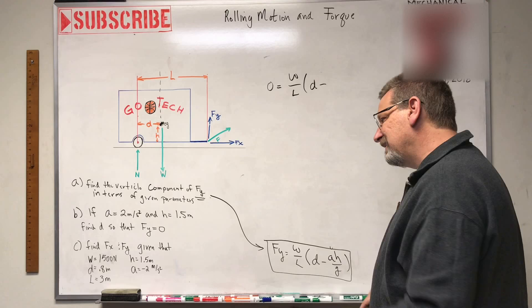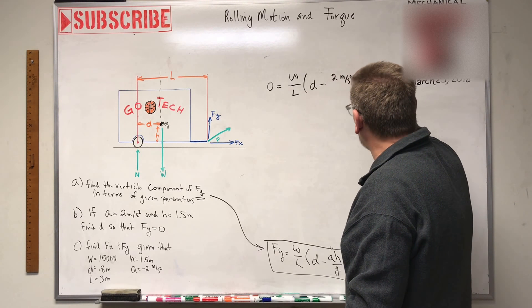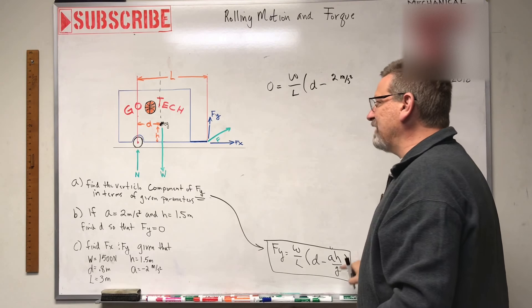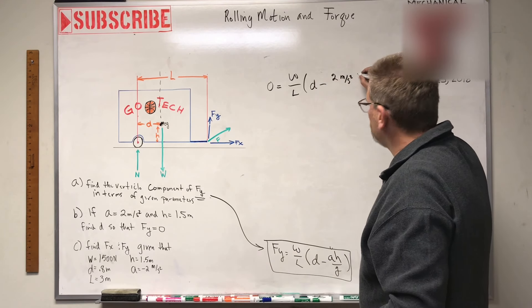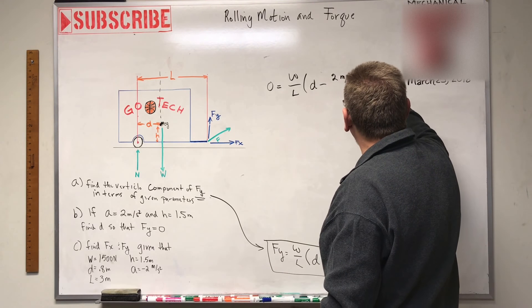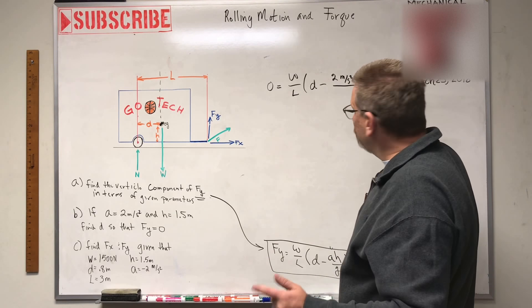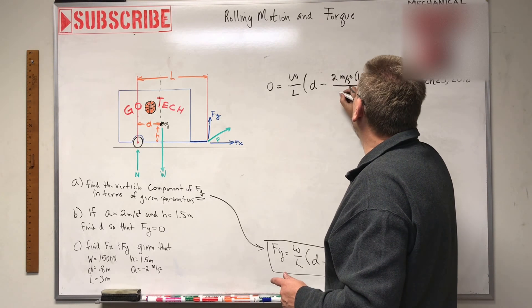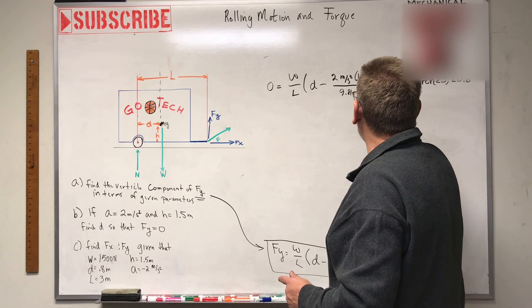A, I know. A is two meters per second, two meters per second squared rather. And then H, what is H going to be in? H is going to be in meters. So an H is given as 1.5. So times 1.5 divided by G, and G is going to be, let's see, what? 9.81 meters per second squared.